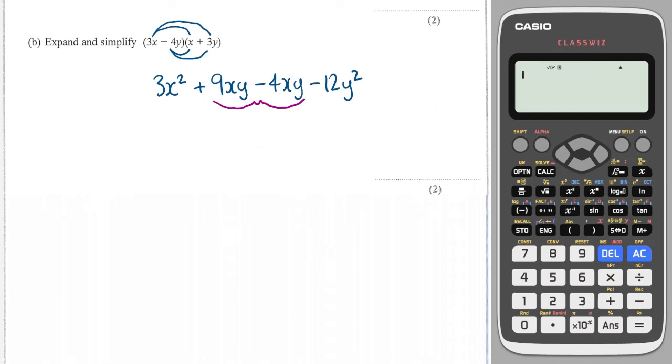So I have 3x squared, and how many xy's do I have? I have 9 minus 4, which is plus 5, and then minus 12y squared.